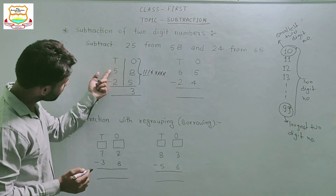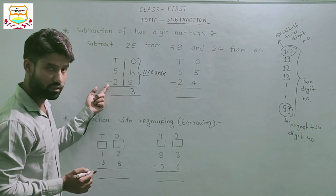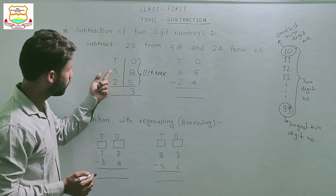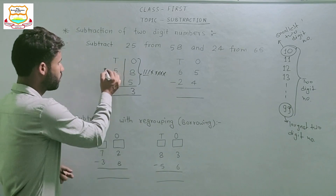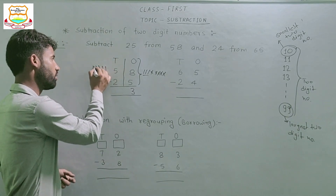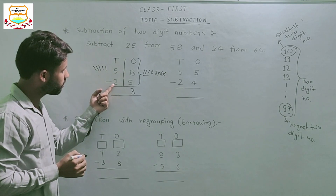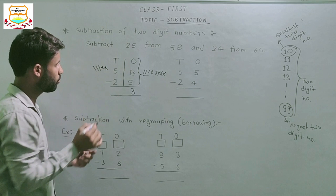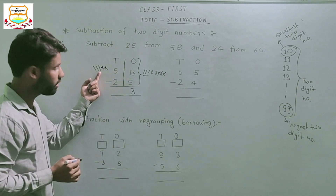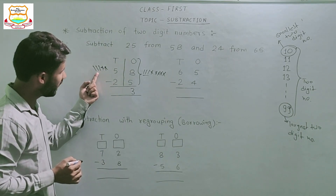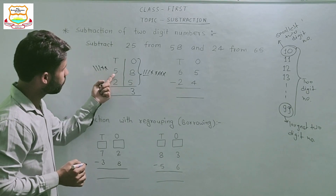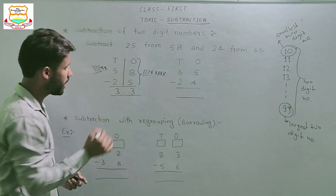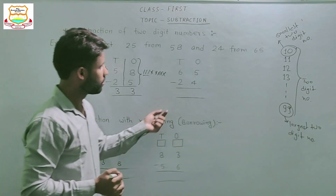Similarly, subtract tens from tens. Subtract 2 from 5. Same process: draw 5 strips in front of 5, then cut 2 strips — 1 and 2. How many sticks are remaining? Count: 1, 2 and 3. Means 5 minus 2 equals 3.